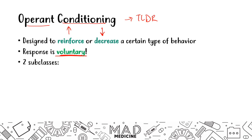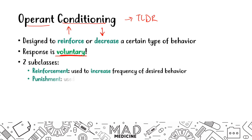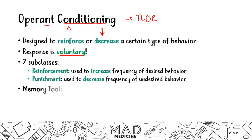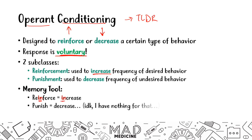There are two subclasses of operant conditioning. You have reinforcement, which is used to increase the frequency of the desired behavior, and then you have punishment, which is used to decrease the frequency of the undesired behavior. A memory tool: reinforcement and increase both have the word 'in' in them, so they go together. And punishment is used to decrease — think of getting punished for doing something stupid, which would cause you to decrease how often you do it.